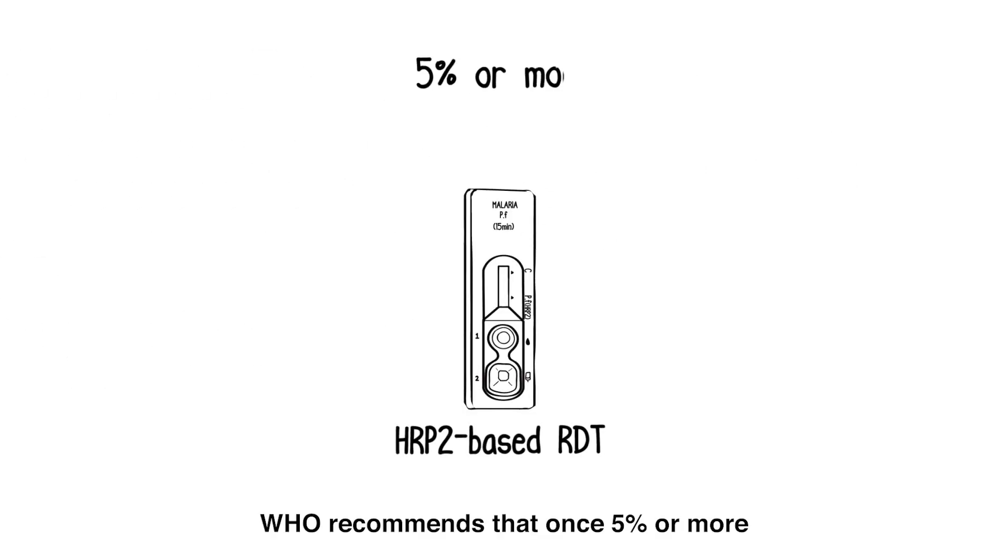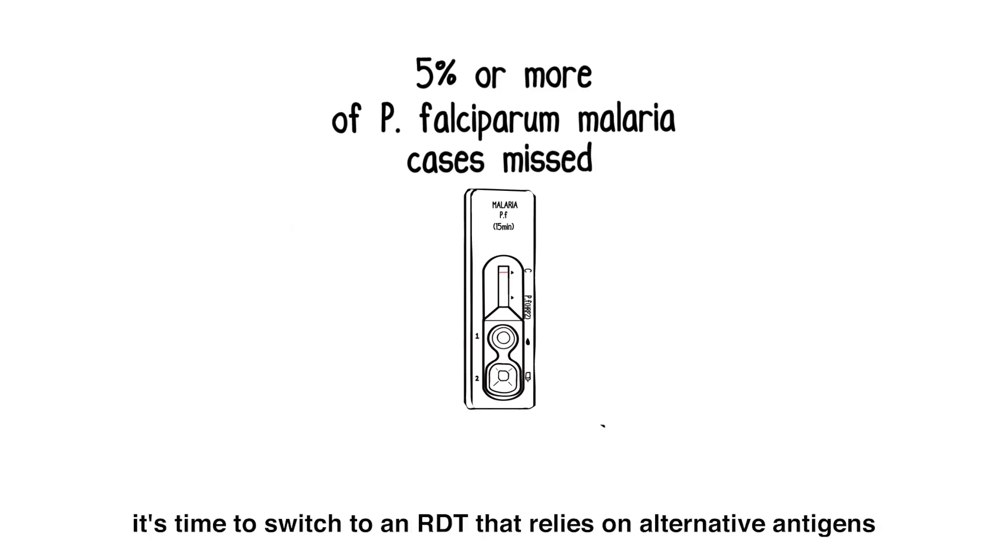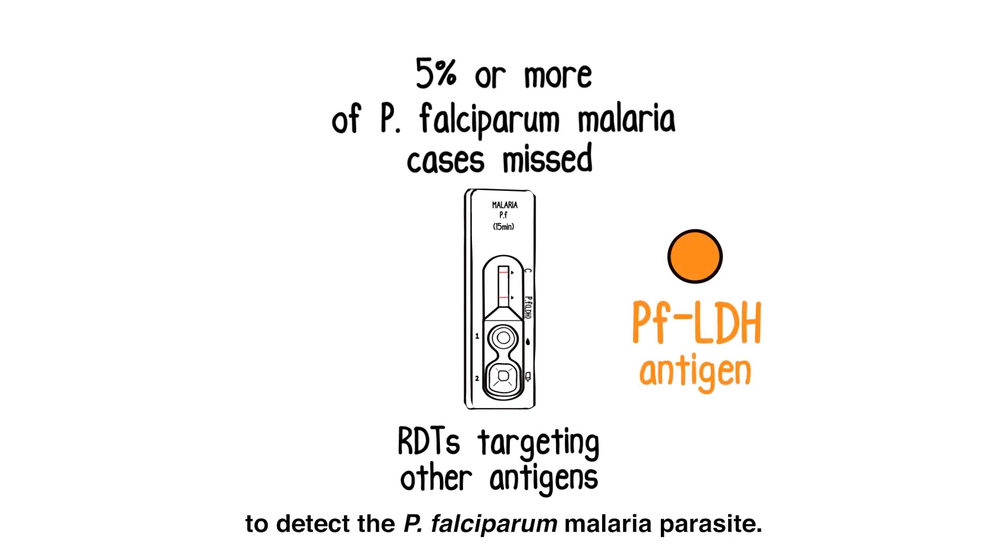WHO recommends that once 5% or more of PF cases are being missed due to HRP2 deletions, it's time to switch to an RDT that relies on alternative antigens to detect the P. falciparum malaria parasite.